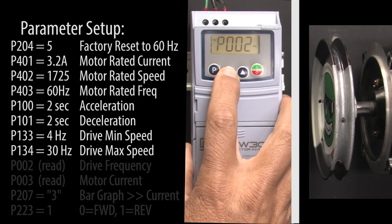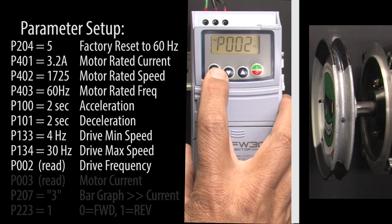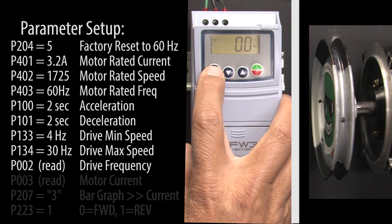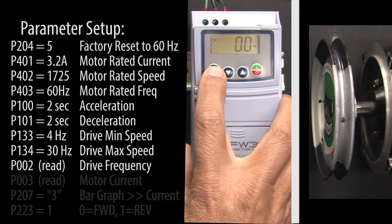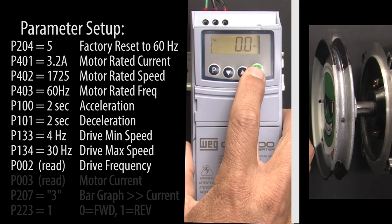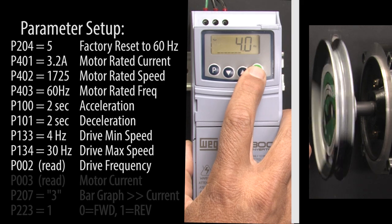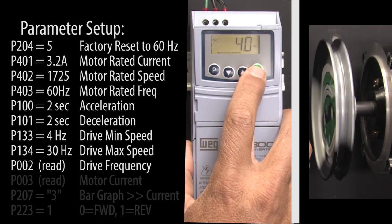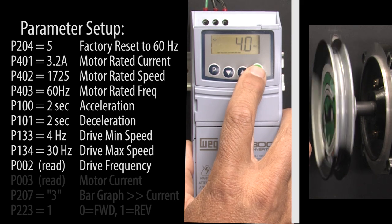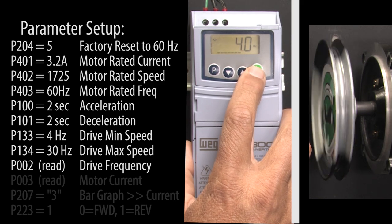Scroll to parameter 2, which shows us the drive's output frequency, and press the run/stop key to start the motor. And sure enough, the drive ramps the motor to the 4 Hz minimum output frequency we just entered. Perfect.